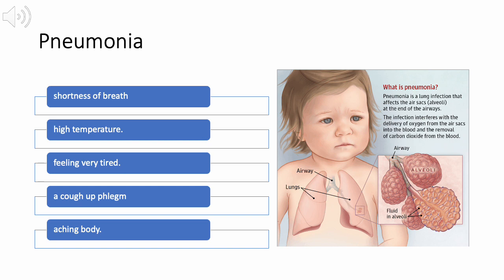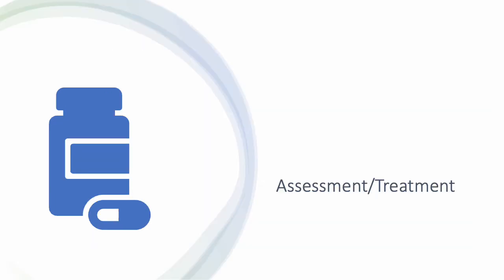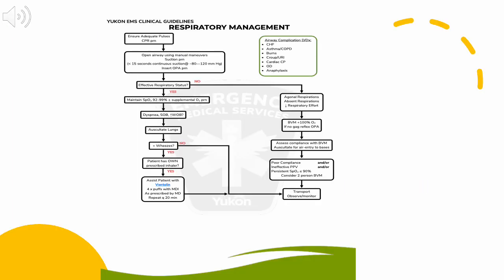Signs and symptoms of pneumonia may include chest pain when breathing or coughing, confusion in adults age 65 and older, cough which may produce phlegm, fatigue, fever, sweating and shaking chills, and nausea, vomiting, or diarrhea. Newborns and infants may not show any signs of infection, or may vomit, have a fever and cough, appear restless or tired, or have difficulty breathing and eating. This concludes the respiratory management protocol overview — please familiarize yourself with it before practical testing.